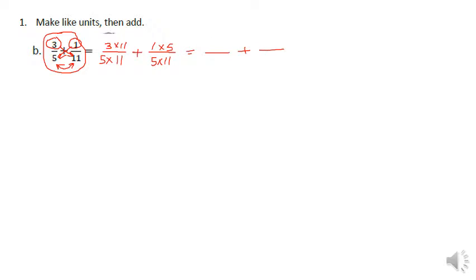To simplify, we can see we have three times 11 which would be 33, five times 11 which would be 55, one times five which would be 5, and five times 11 would be 55. We're going to end up with 38 fifty-fifths.